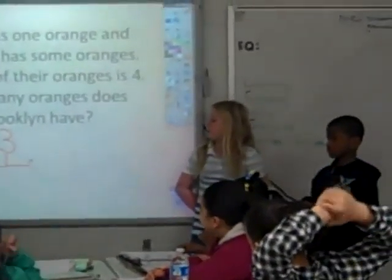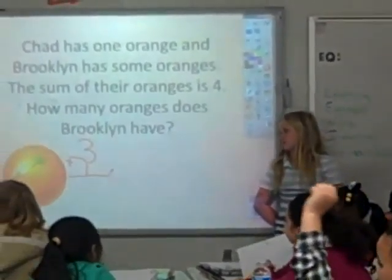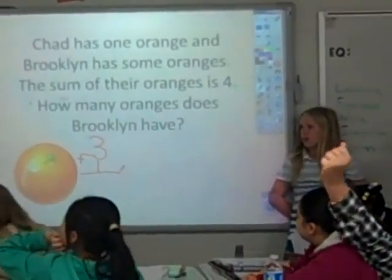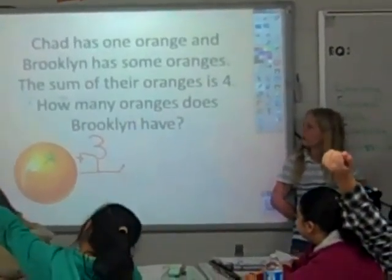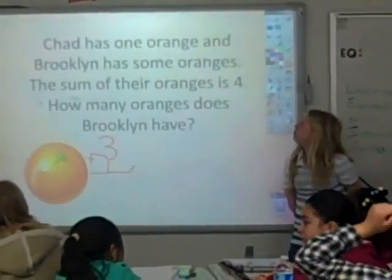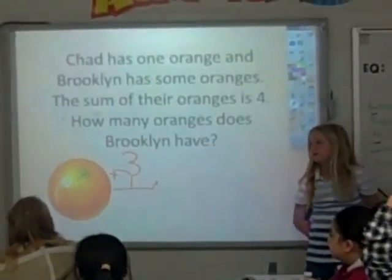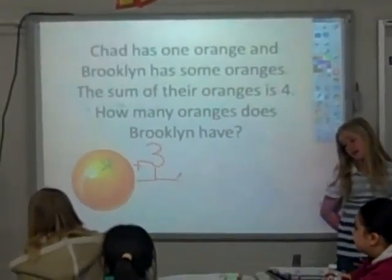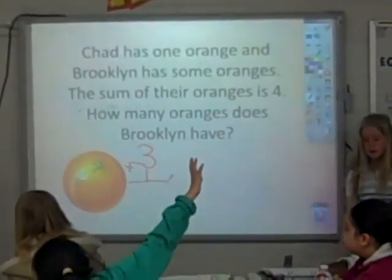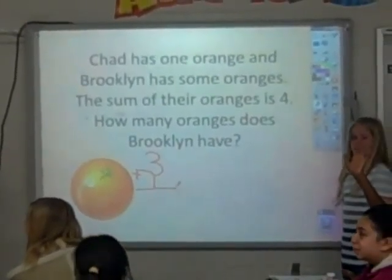What does Brooklyn have? What does your equation say? What does the problem say? I know Brooklyn has a sum. So do I know what that sum is? How can I represent that in my equation? What can I put there for Brooklyn? What did you say, Autumn?